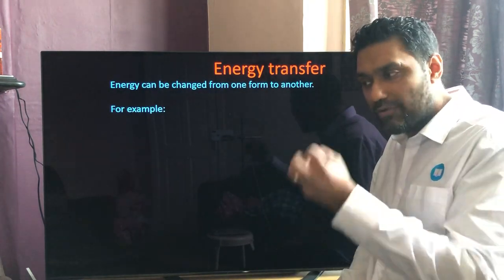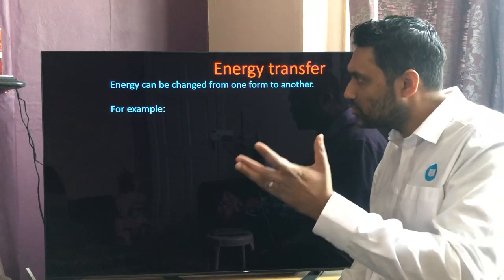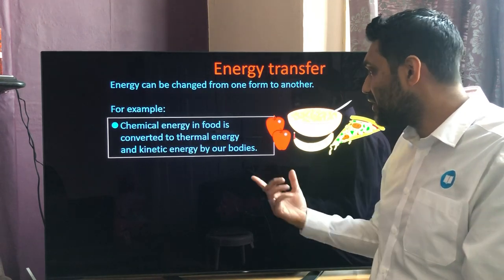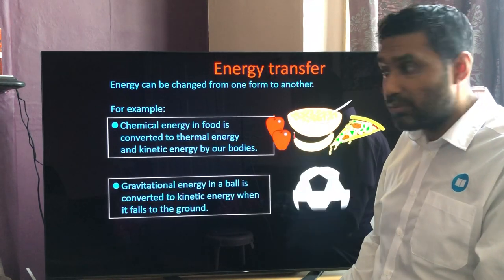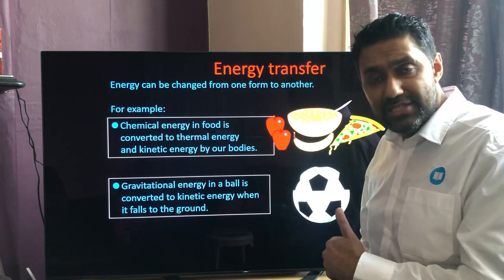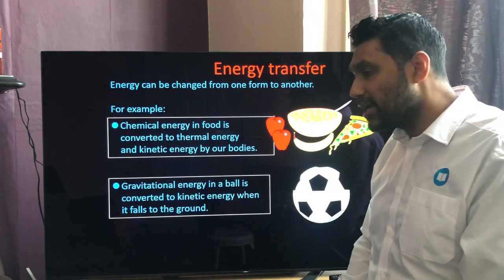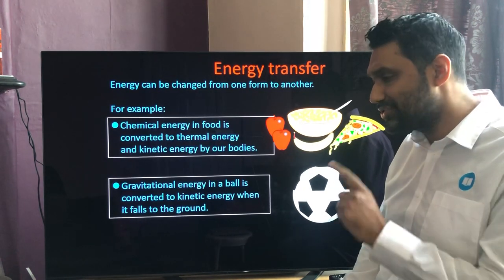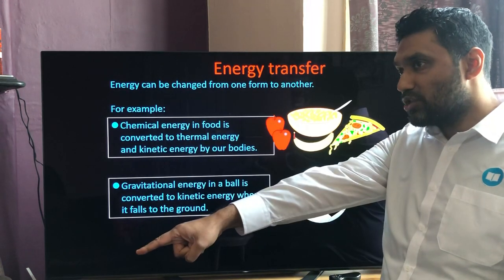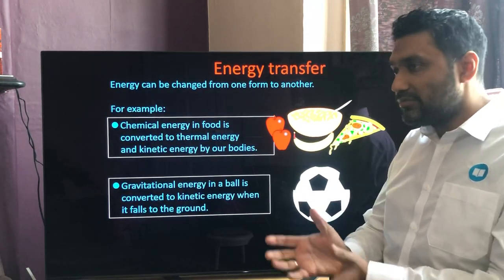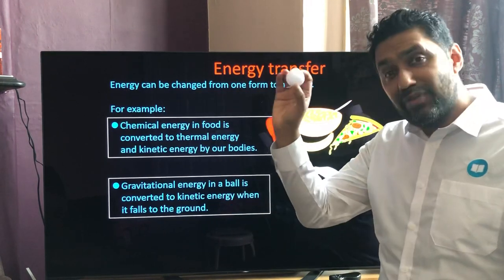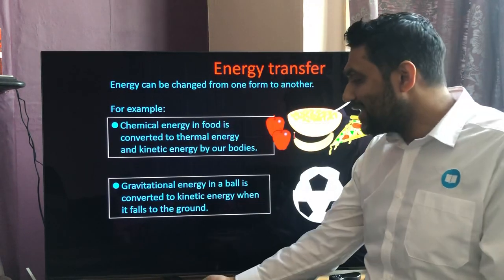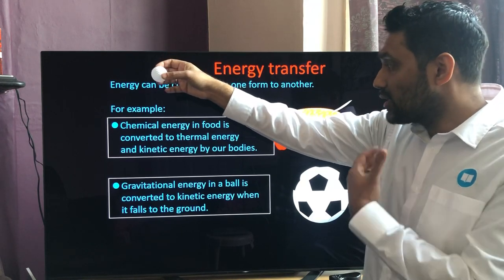Energy keeps going from one store to another store via transfers. For example, chemical energy in food is converted into thermal energy and kinetic energy in our bodies. Now, to finish off this lesson on energy stores and transfers, gravitational potential energy in a ball is converted into kinetic energy as it falls. Here I've got a hollow golf ball — if I lift it up high, the chemical energy from my breakfast goes into my muscles, lifting the ball against gravity, so it gains more gravitational potential energy.